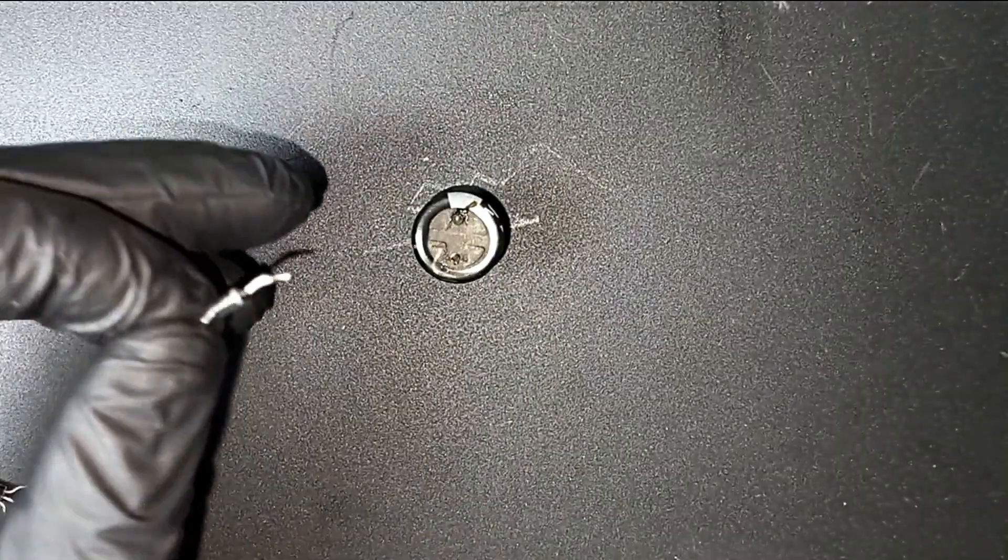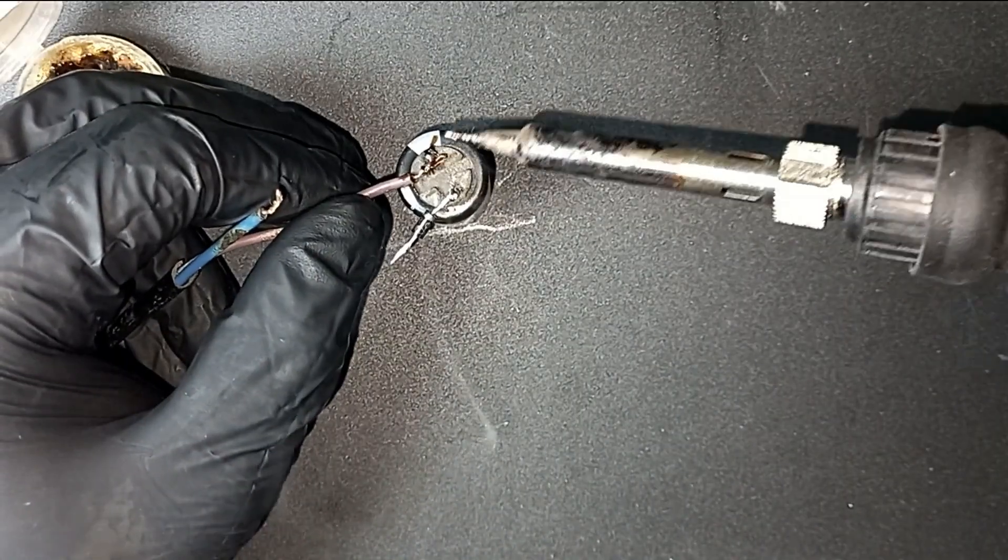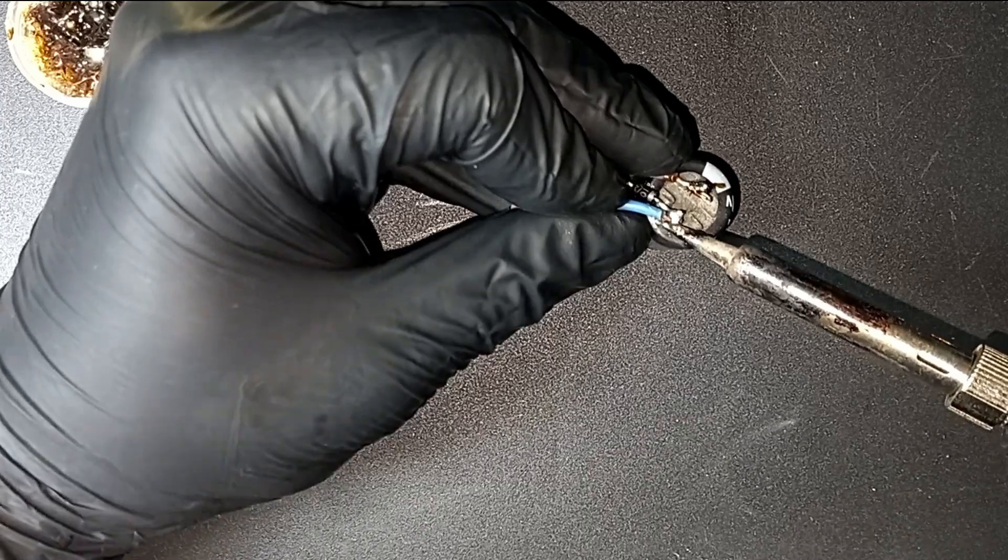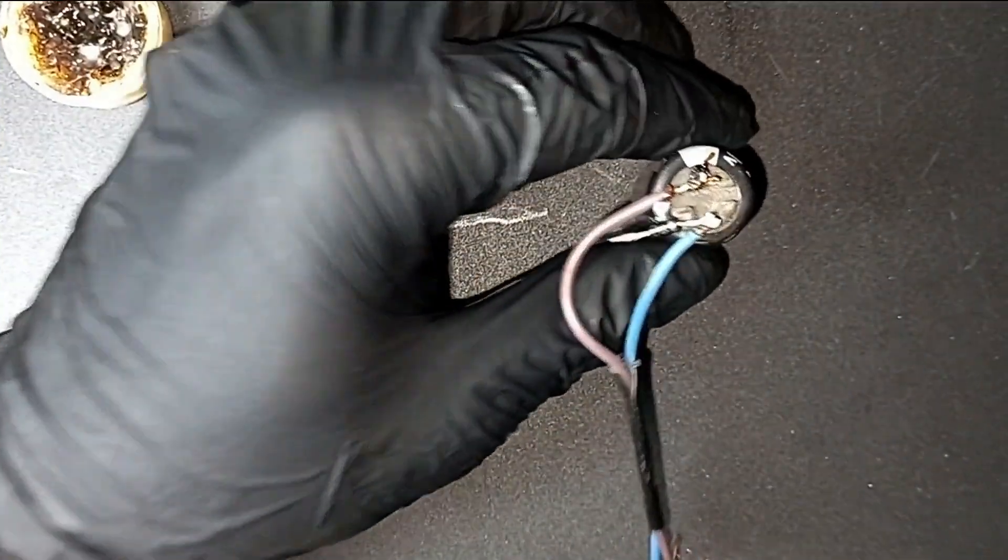Next, we connect the cathode of the diode to the positive terminal of the capacitor. After that, we connect the power cable to the capacitor. It should look something like this.